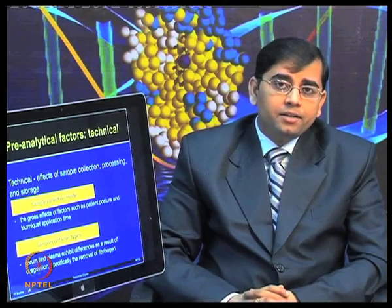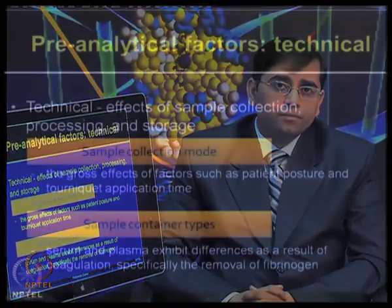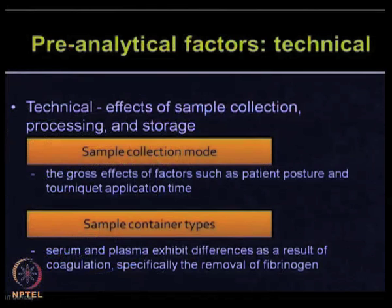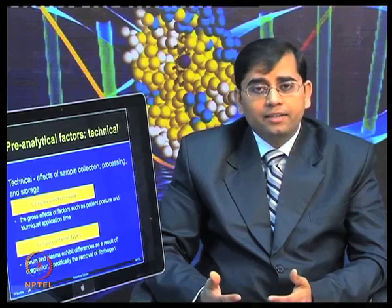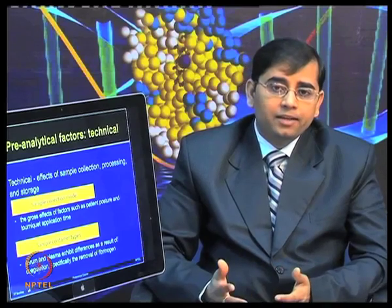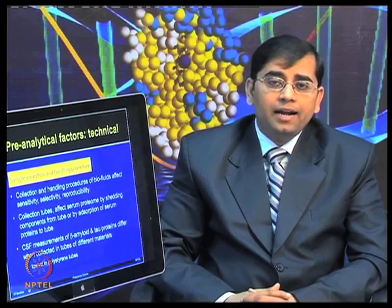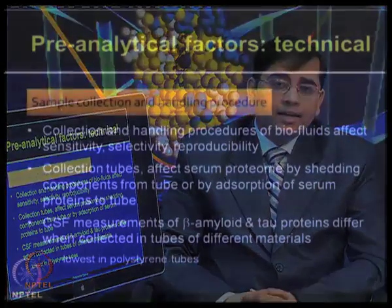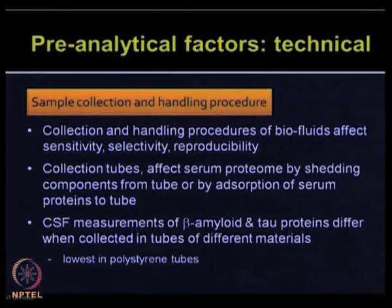We have looked at different biological pre-analytical factors. There are also different technical artifacts: how to collect, process, and store samples. The sample collection mode, factors such as patient posture and tourniquet application times are very important. Sample container types matter too — when collecting serum and plasma, they exhibit differences as a result of coagulation, specifically the removal of fibrinogen. Collection and handling procedures affect the sensitivity, selectivity, and reproducibility of experiments.